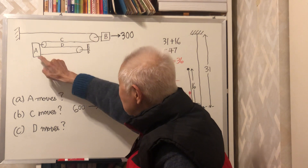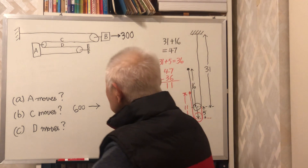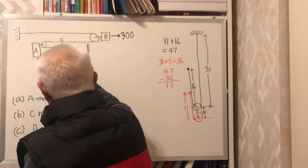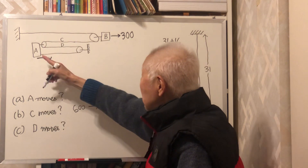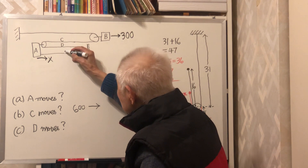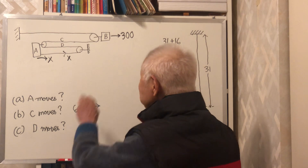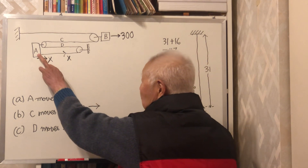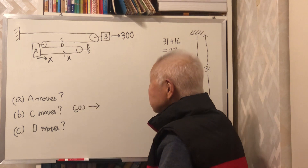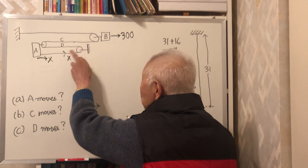How much does A move? Let's say A moves x units. If A moves x, then this portion of the rope moves x units. Because this is a fixed pulley, when A moves x units, this portion — the D portion — will also move x units to the right-hand side.